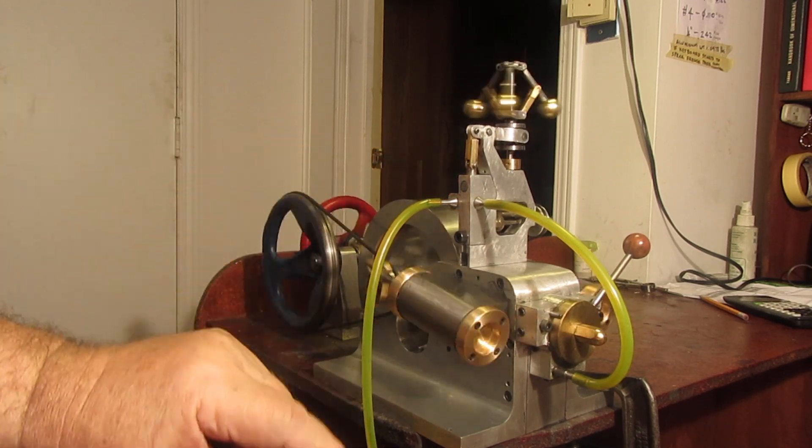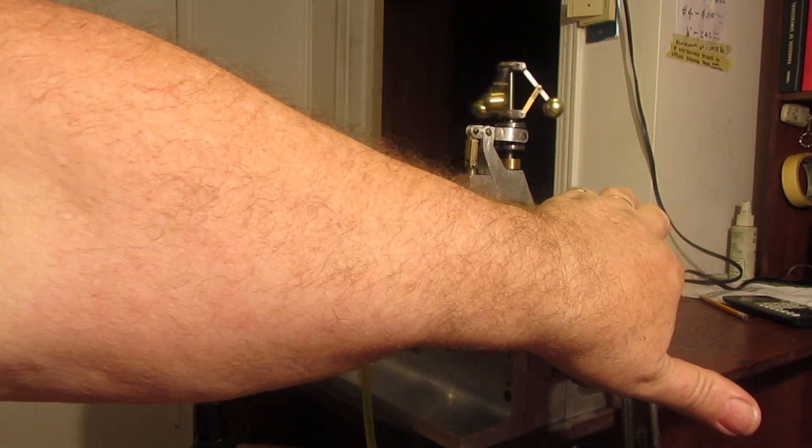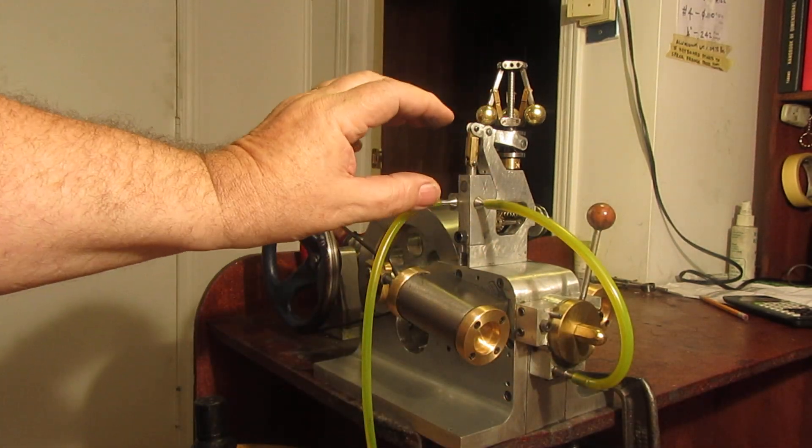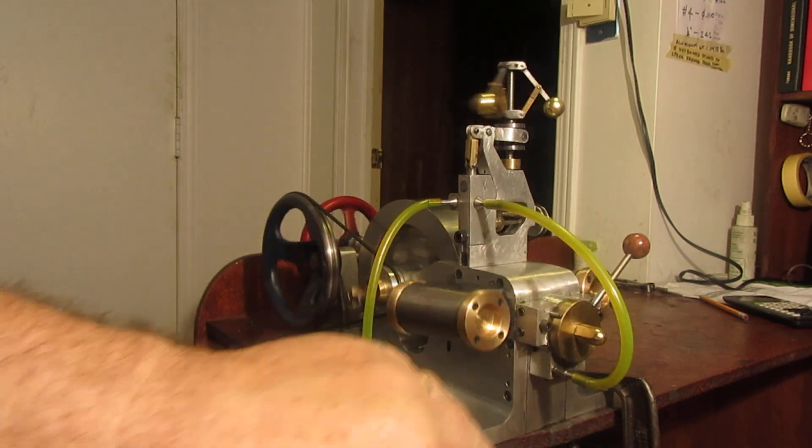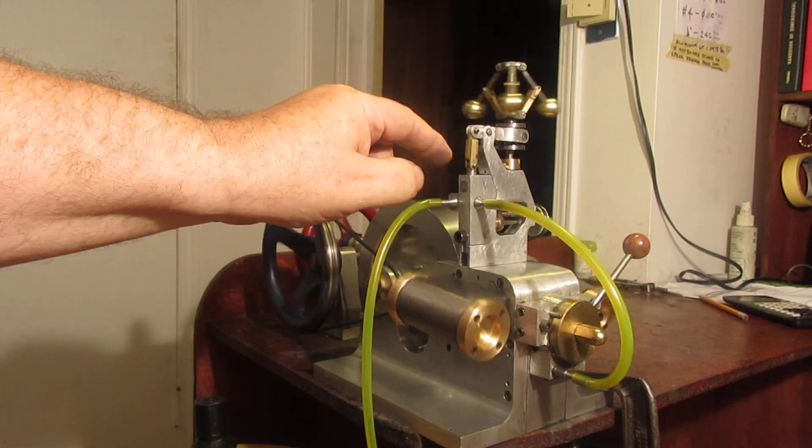So there's quite a dramatic difference in the position of the valve when the engine is running and when it's not. When it's not, everything closes down. When it is, watch the lever—it flies back up and regulates the steam valve.